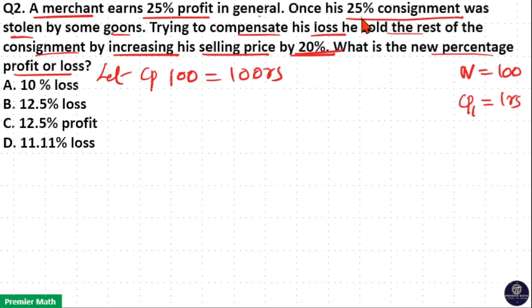Now 25% of consignment was stolen. 25% of 100 is 25 units. So 25 units is stolen. So 25 units stolen means remaining is 75 units. So he can only sell the 75 unit consignment.